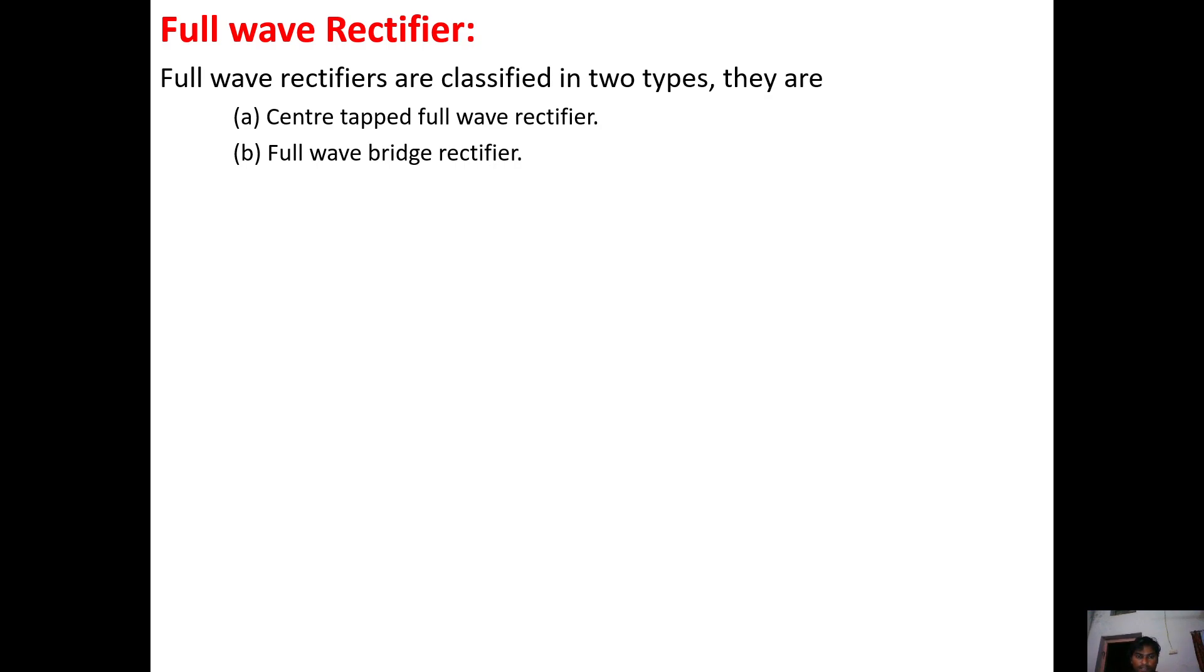Half wave rectifier only rectifies the positive half cycle. In full wave rectifier, it rectifies both the cycles. The full wave rectifier is classified into two types: center tapped full wave rectifier and full wave bridge rectifier.